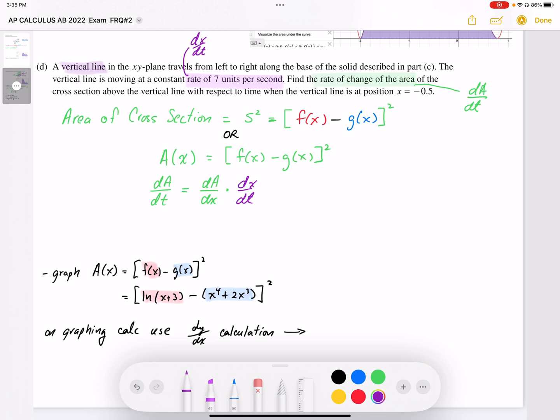And then from the graphing calculator, I can just use a dy by dx function. So when I type that into my calculator, I'm going to put this in my graph. And using the dy by dx function, I'm going to find that value at negative 0.5. And that works out to be negative 1.324551.